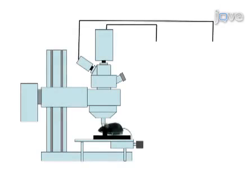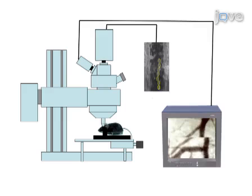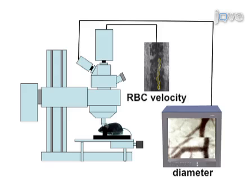The third step of the procedure is to acquire intravital microscopy images using conventional and fluorescent illumination, and to select specific study sites for online measurements of vessel diameter and RBC velocity.